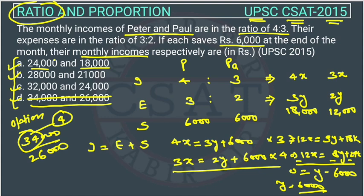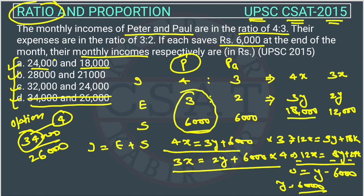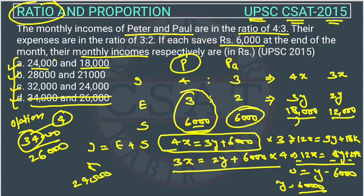With y = 6,000, Peter's expense is 3y = 18,000, and Paul's is 2y = 12,000. Adding savings: Peter's income is 18,000 + 6,000 = 24,000 and Paul's income is 12,000 + 6,000 = 18,000. So the answer is option A.